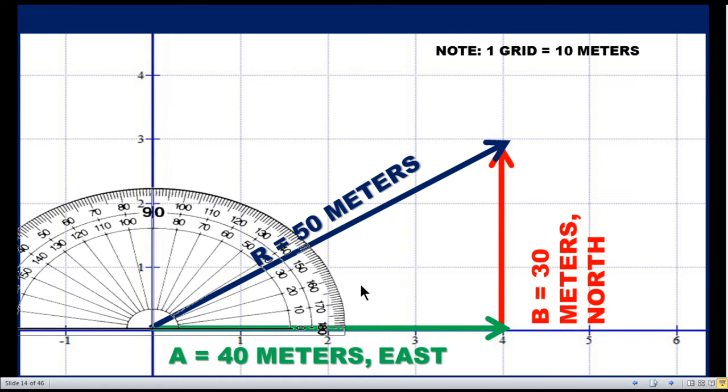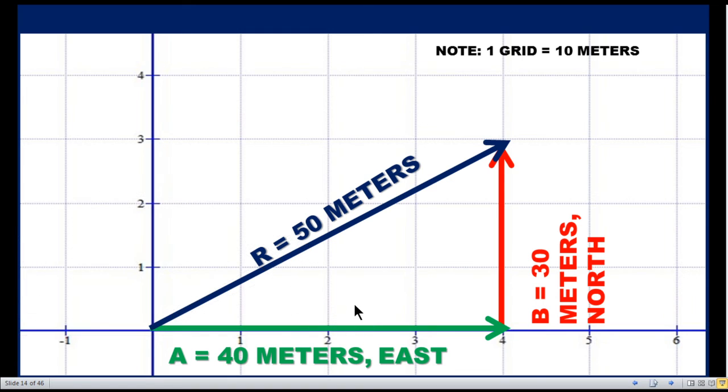We can use the protractor to measure the vector angle. The vector angle is 37 degrees north of east.